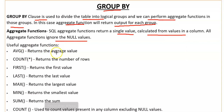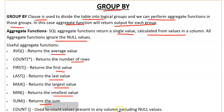Different aggregate functions are: AVG returns the average value, COUNT(*) returns the number of rows, FIRST returns the first value, LAST returns the last value, MAX returns the largest value, MIN returns the smallest value, and SUM returns the sum. COUNT function counts values in a column excluding null values — if there is a null value in any cell, it will not count.